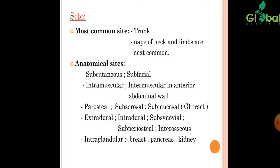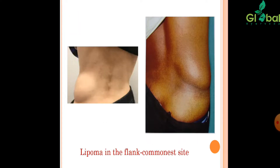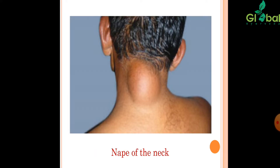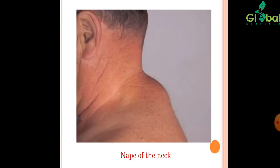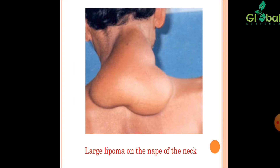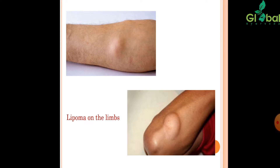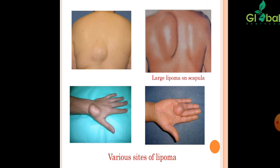These are pictures of Lipoma. Lipoma in the flank is the commonest site. The nape of the neck is also a very common site of Lipoma, including large lipomas on the nape of the neck. Lipoma on the limb is also commonly found in our OPDs. These are the various sites of Lipoma — see the single lipoma at the palm as well.